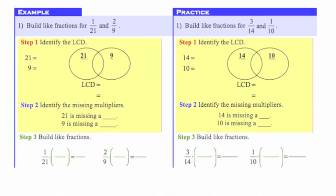We're going to start by building like fractions. I've got two fractions in my example. To add or subtract these fractions, I need a common denominator. The first thing we do is take these two denominators, 21 and 9, and factor them into their prime factorization. The prime factorization for 21 is 3 times 7, and for 9 that is 3 times 3.